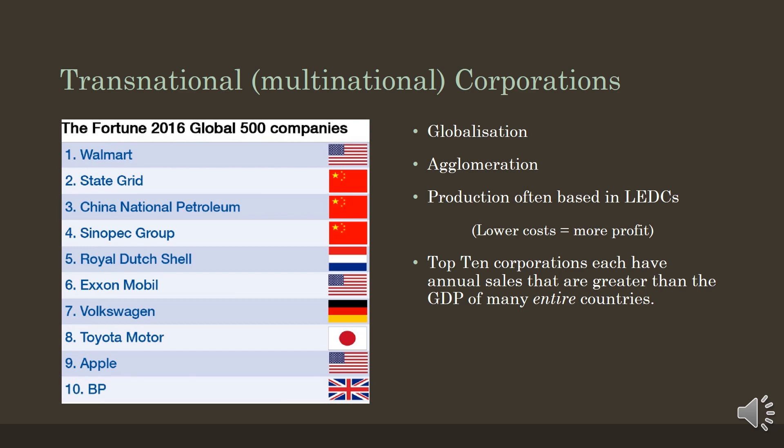Characteristically, the headquarters and research and development activities of transnational companies are often in the HIC country of origin, while their manufacturing is often carried out in middle income countries and low income countries. Globally, they directly employ around 45 million people, provide jobs indirectly for millions more workers, and control over 75% of global trade.